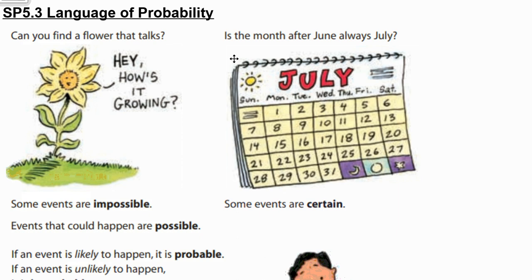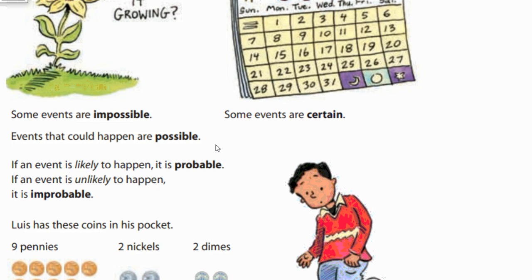Another word that we use is certain. So, is the month after June always July? Well, we know that July will always come after June no matter what, so that is a certain event — we know for sure it's going to happen.